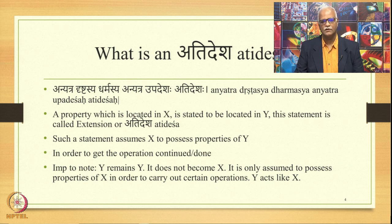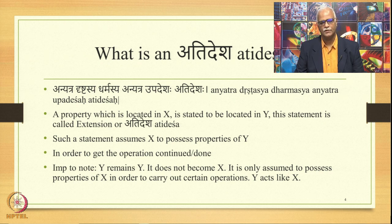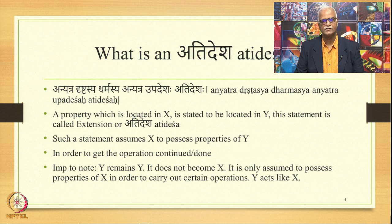Such a statement assumes Y to possess properties of X in order to get some operation carried out. It is very important to note that when an extension happens, Y does not become X — Y remains Y. It is only assumed that Y possesses the properties of X in order to carry out certain operations. In a nutshell, Y acts like X in certain environments. This is the core of the concept of Atidesha.